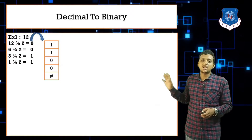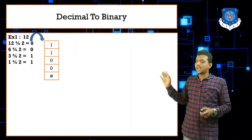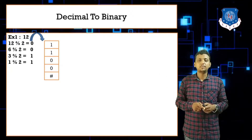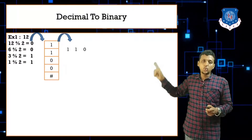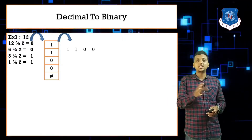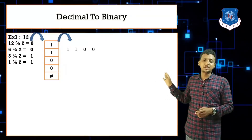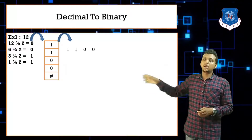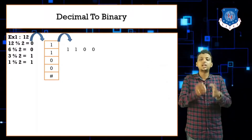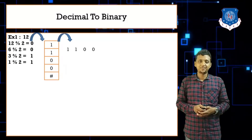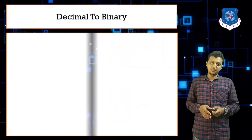Whenever you get 1 mod 2, stop. Now pop all elements from the stack: we get 1, 1, 0, 0 — so the binary is 1100. To verify: 0×2⁰ + 0×2¹ + 1×2² + 1×2³ = 0 + 0 + 4 + 8 = 12. So the answer is confirmed. It is easy to convert a decimal number to binary using a stack.